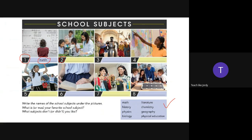Number two: you've got a microscope and some green leaves — daun-daunan hijau. That's Biology. Number three: there are medieval night costumes — kostum abad pertengahan. They must be talking about History. Because of the medieval costumes, that's History.